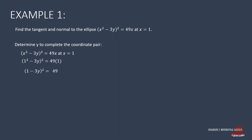As we are solving for y, we free the equation from exponents by taking the square root of both sides, ending up with 1 minus 3y is equal to 7. Now we transpose 1 to the other side to have negative 3y is equal to 6. Then divide both sides by negative 3 to get y equal to negative 2.